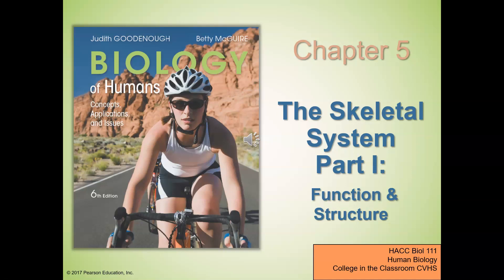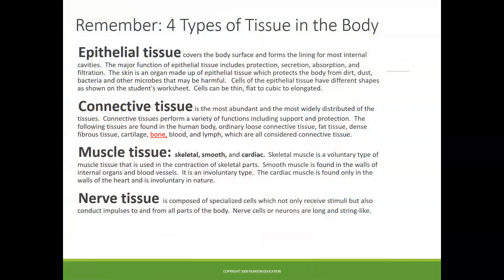This information comes from Chapter 5 in your textbook. Remember the four tissue types found in the body: epithelial, connective, muscle, and nerve. Bone is a type of connective tissue. Remember that the function of connective tissue is support and protection, and we all know that bone is known for that. Bone and the associated structures, cartilage and ligaments, are all connective tissue.